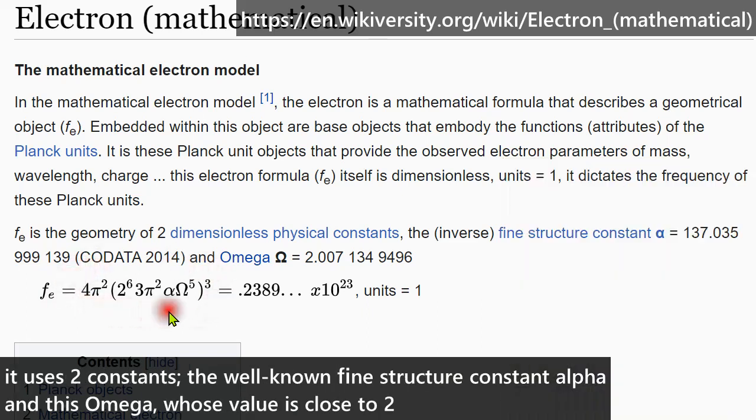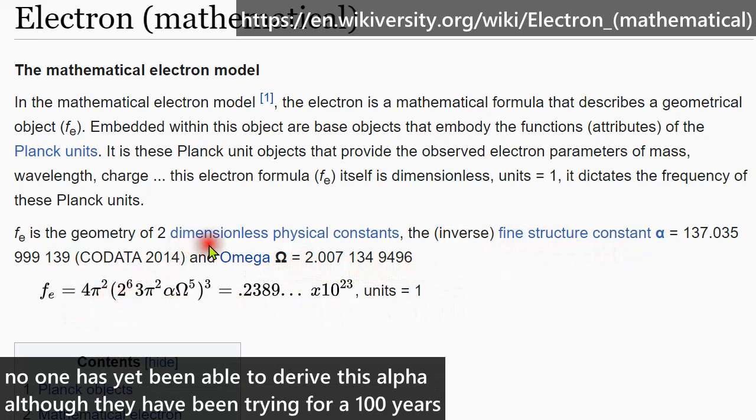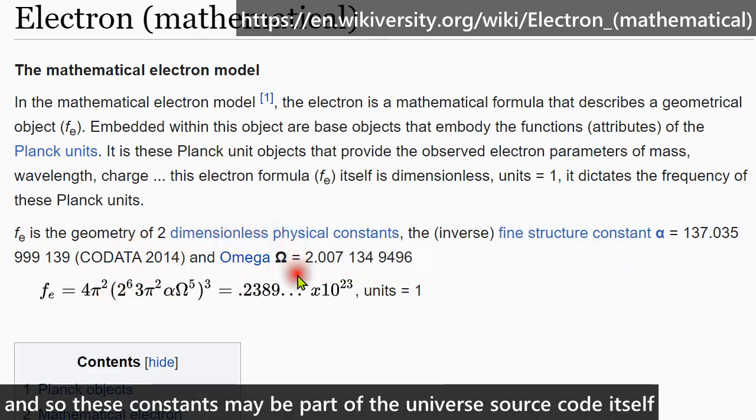It uses two constants, the well-known fine structure constant alpha and this omega, whose value is close to two. These two constants themselves have no dimensions, no one has yet been able to derive this alpha, although they've been trying for a hundred years. And so these constants may be part of the universe source code itself.